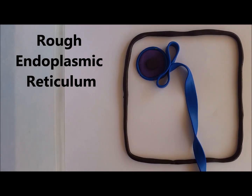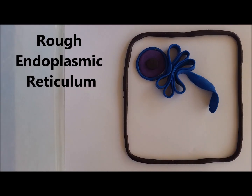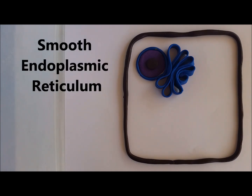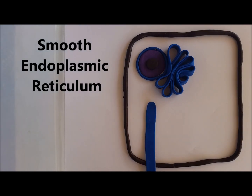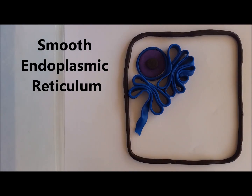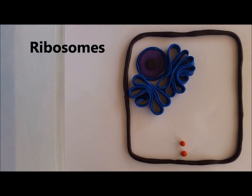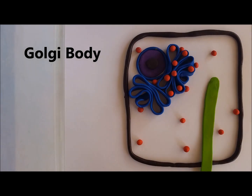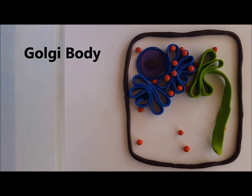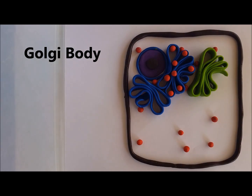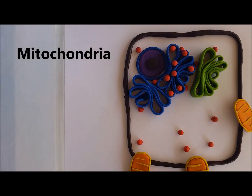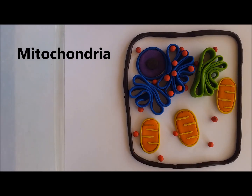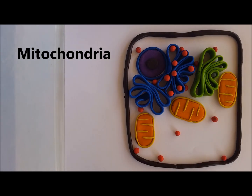Plant cells also share a rough endoplasmic reticulum where substances are produced and transported to the Golgi body, a smooth endoplasmic reticulum where lipids are produced and toxic substances are broken down, ribosomes which produce proteins, a Golgi body which packages and transports different materials around the cell and outside the cell, and mitochondria where cellular respiration takes place.